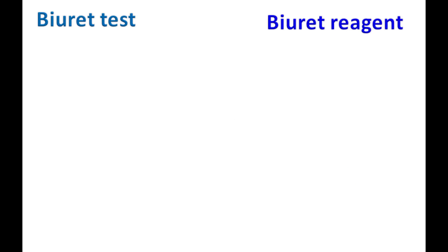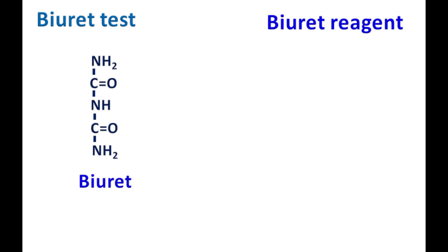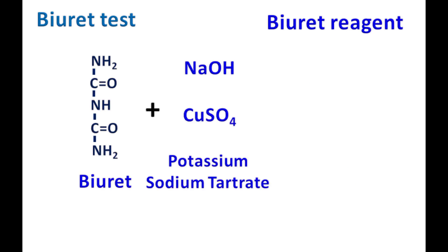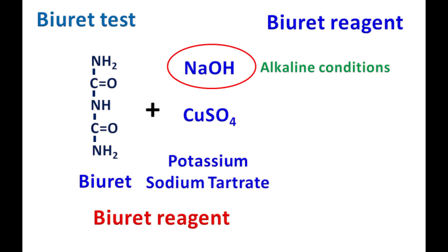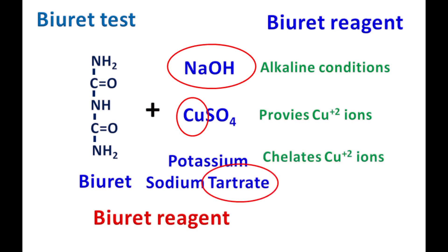The biuret reagent is a mixture of biuret, sodium hydroxide, copper sulfate, and potassium sodium tartrate. Sodium hydroxide provides alkaline conditions, copper sulfate provides copper ions, and potassium sodium tartrate provides tartrate, which forms a complex with copper ions, resulting in the formation of a stable copper tartrate complex.